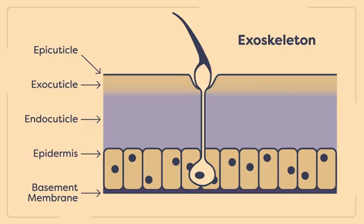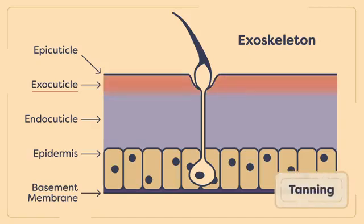The exoskeleton is both a hard and flexible structure. How does it do this? Well, this has to do with the different layers that make up the exoskeleton. Specifically, the exocutical layer is hardened through a process known as tanning, which in insects includes a cross-linking of proteins in the chitin protein matrix known as sclerotization.